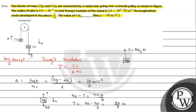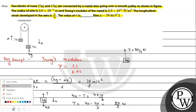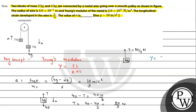Now we find the longitudinal strain. Using Young's modulus: Y = longitudinal stress / longitudinal strain = (T/A) / (ΔL/L). So ΔL/L = T / (A × Y). The area A = πr² = π × (4 × 10⁻⁵)² = 16π × 10⁻¹⁰ m².